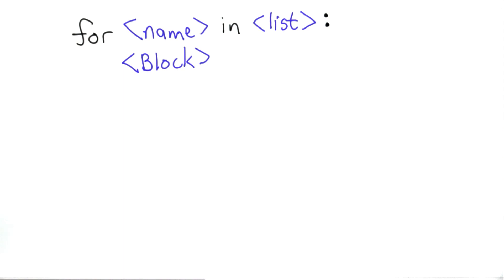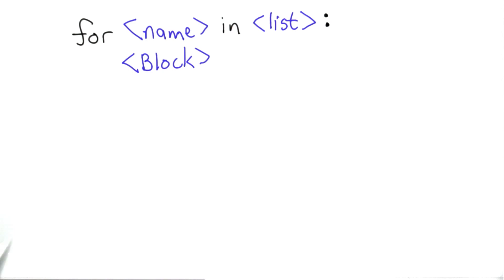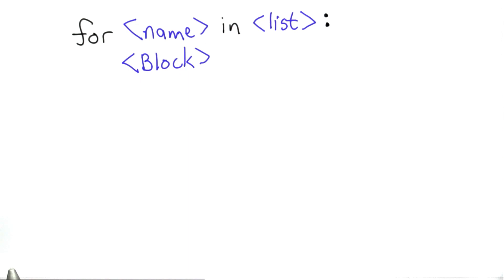What a for loop like this means is that for each element in the list, we're going to assign that element to the name and evaluate the block, and we'll do that in order going through the list.